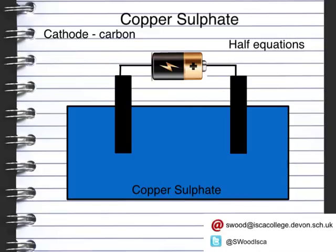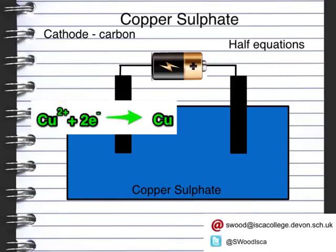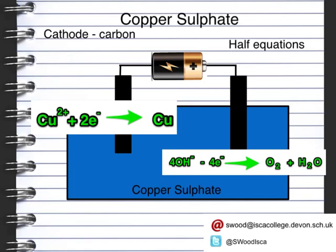The first half equation happens at the cathode, and this is where we get the formation of copper. Here we get the copper ions, the Cu²⁺, which gain two electrons from the cathode, and that becomes copper solid. We will eventually get a copper solid forming around the outside of the carbon electrode. At the anode, we get a different reaction happening, and this is a separate half equation where the hydroxide ions, which are in the copper sulfate solution, actually lose four electrons. So, four hydroxide ions lose four electrons, and those electrons are able to go back around the circuit over to the cathode.